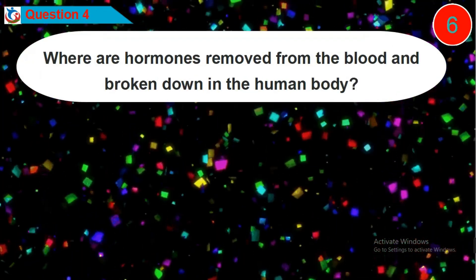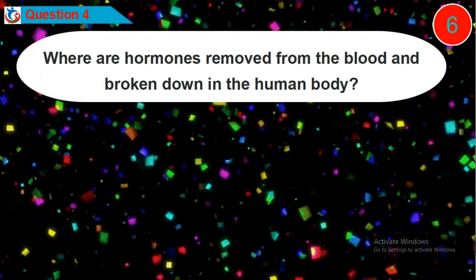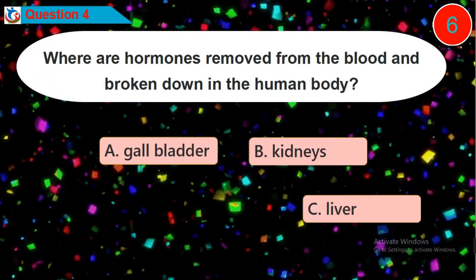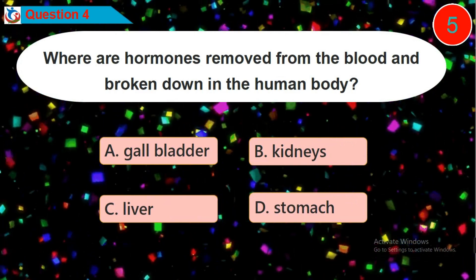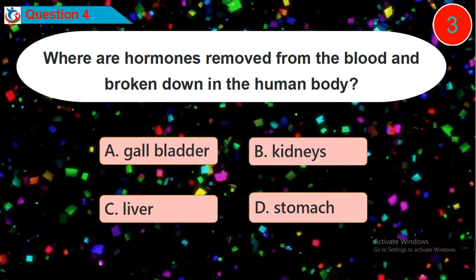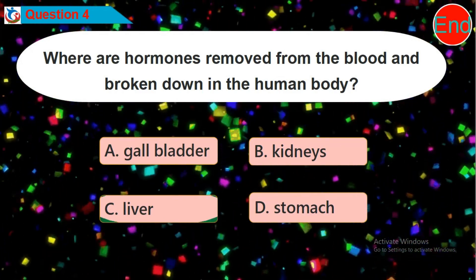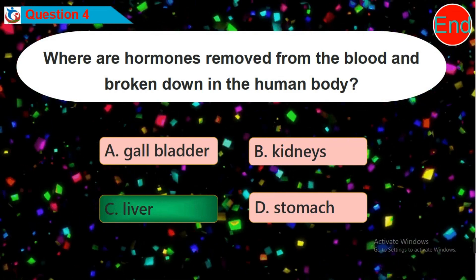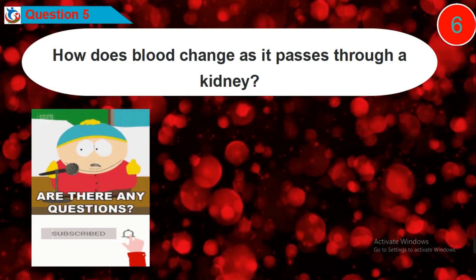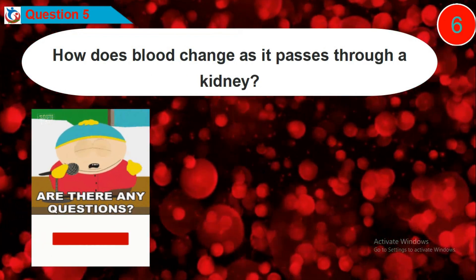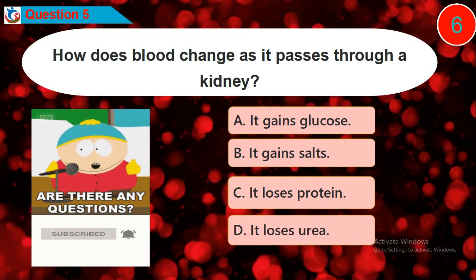Question 4: Where are hormones removed from the blood and broken down in the human body? Is it option A, B, C, or D? Question 5: How does blood change as it passes through a kidney? Is it option A, B, C, or D?